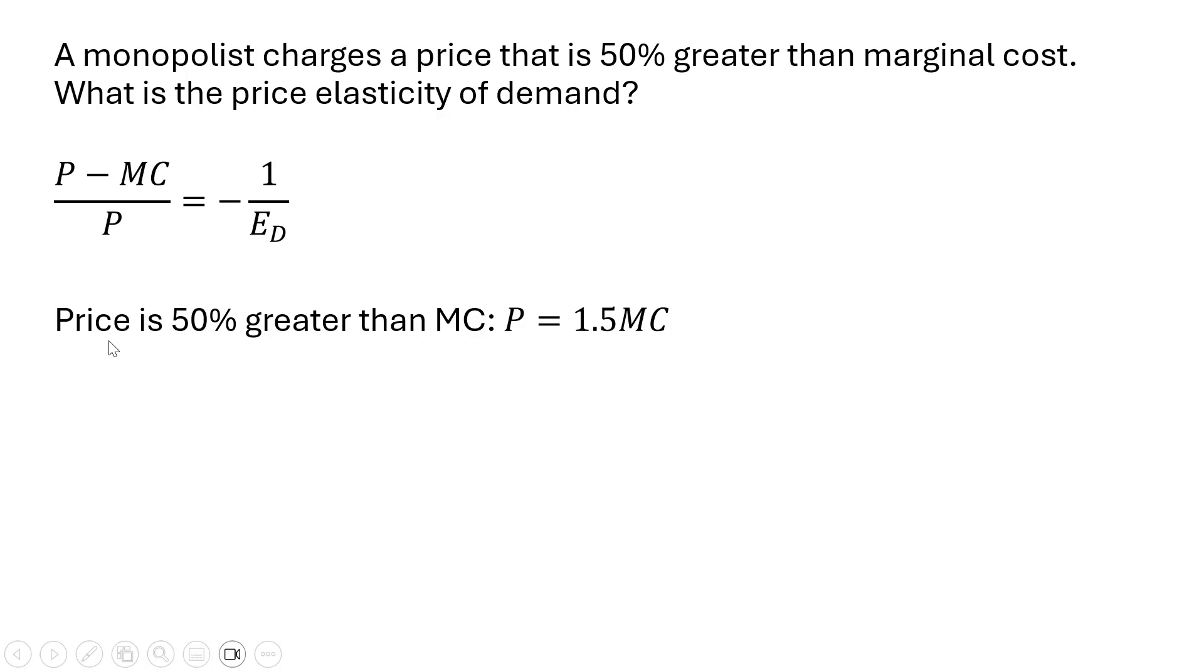In this problem, again, we're told that price is 50% greater than marginal cost. We can write that as follows: P, price, equals 1.5 times marginal cost. So the 1.5 represents a 50% increase in marginal cost.